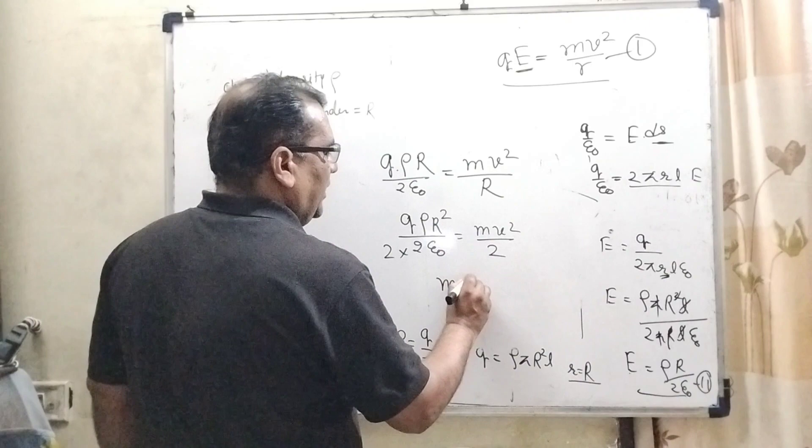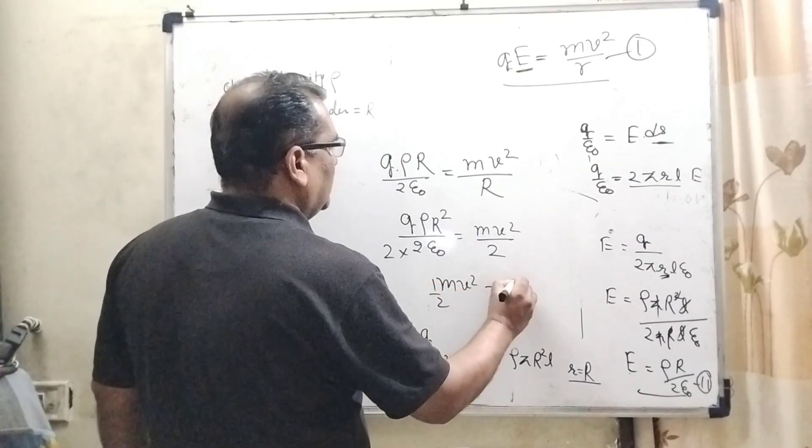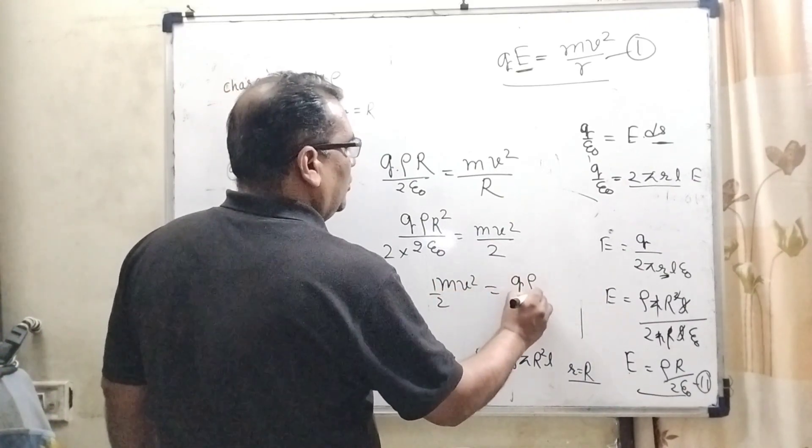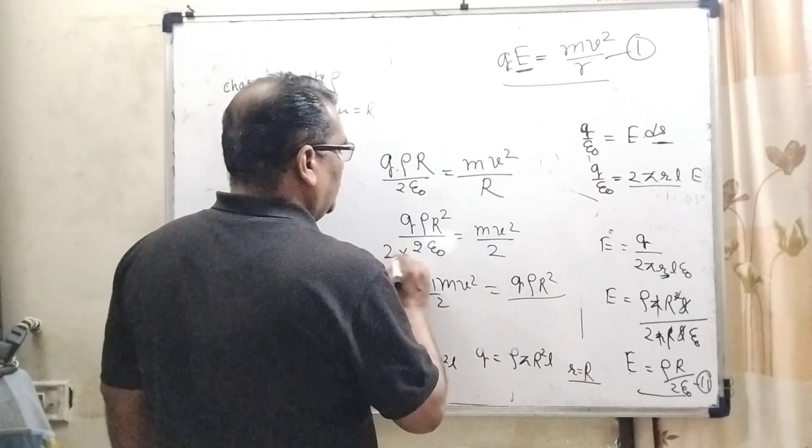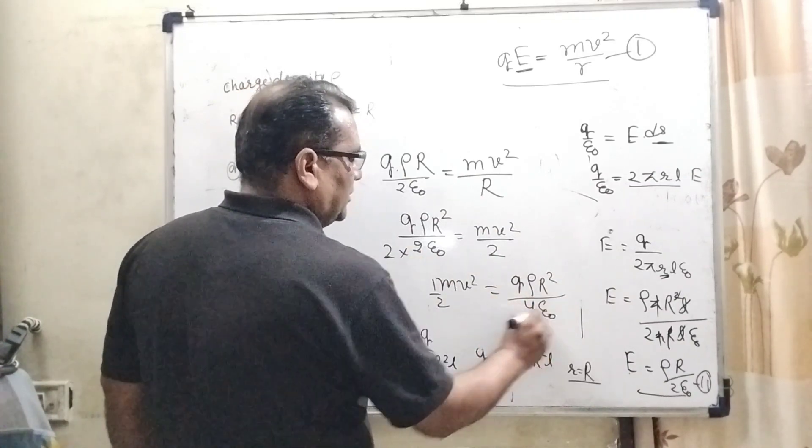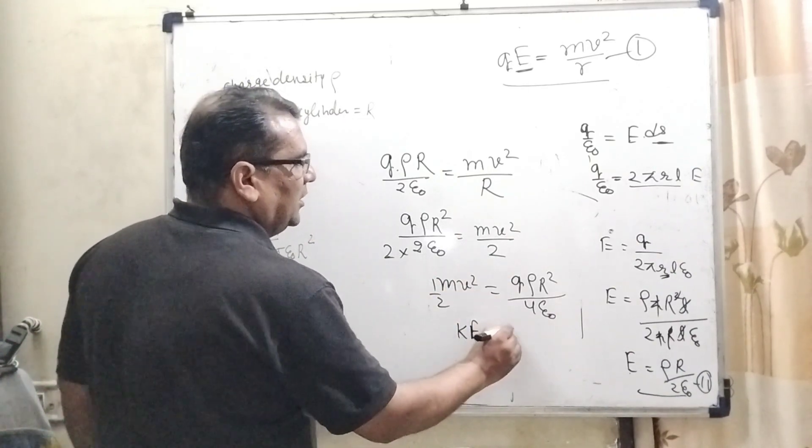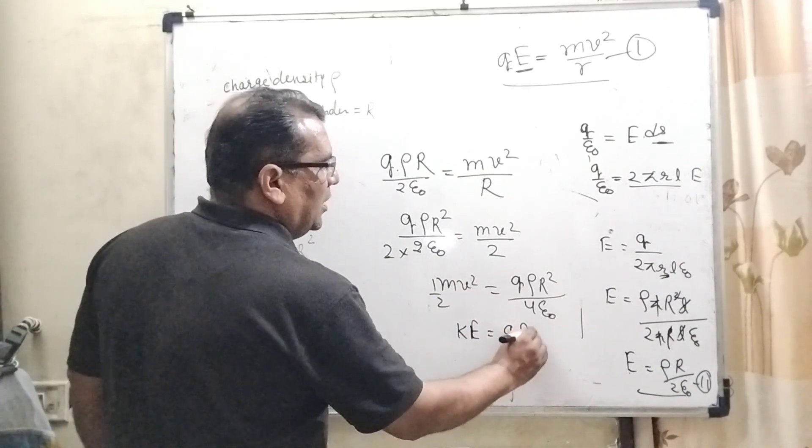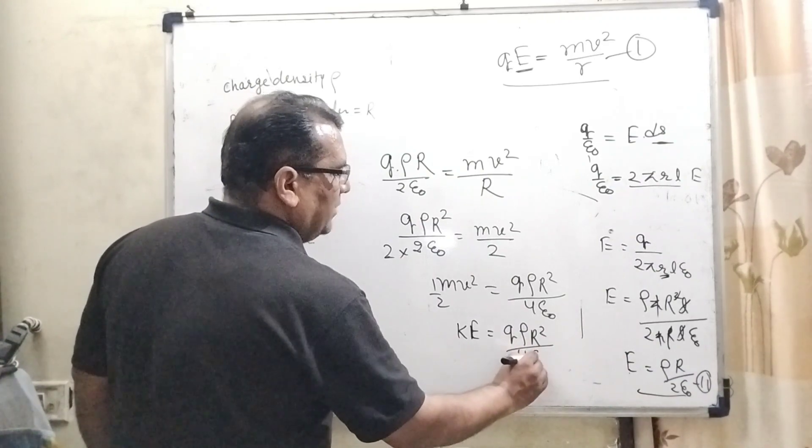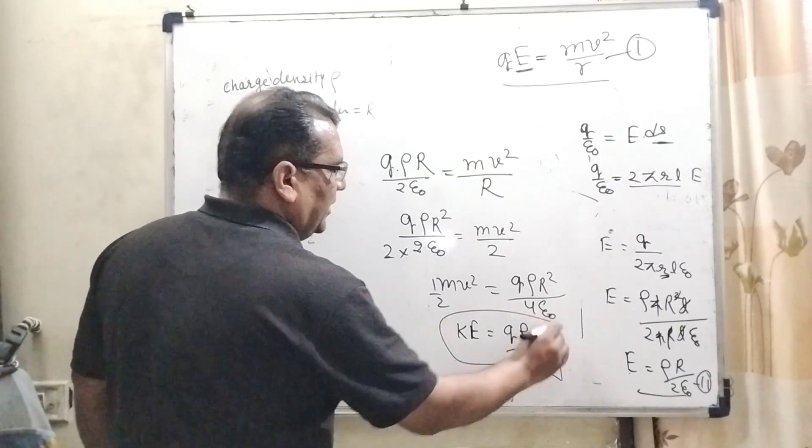Divide both sides by 2. Then ½mv² = QρR²/4ε₀. So here, ½mv² can be written as kinetic energy = QρR²/4ε₀. It is the kinetic energy.